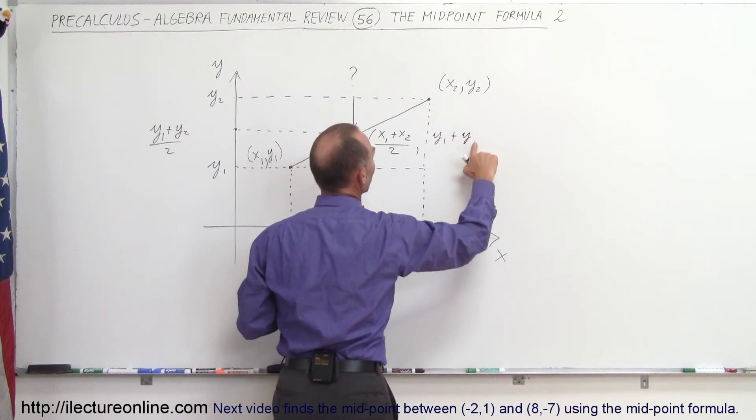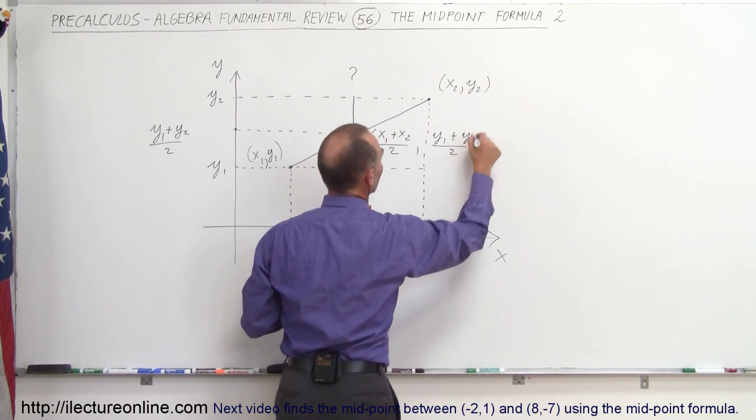And the Y coordinate is simply the sum of the two Y coordinates, Y1, Y2, divided by 2, like that.